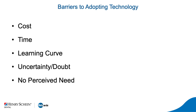What are the current barriers to adopting technology? One is cost — whenever new things come out, they cost a lot of money, so we have to figure out our return on investment. There's also the time to learn and adopt, a learning curve for those who may not be computer savvy, and uncertainty and doubt as to whether it will do what's advertised. Maybe we also don't have a perceived need — our colleagues have one but we wonder if we actually need it.